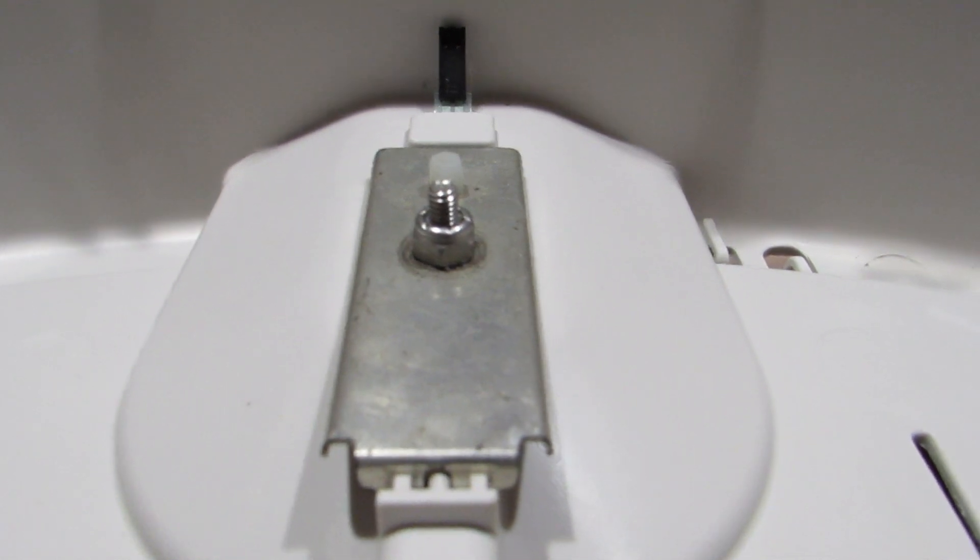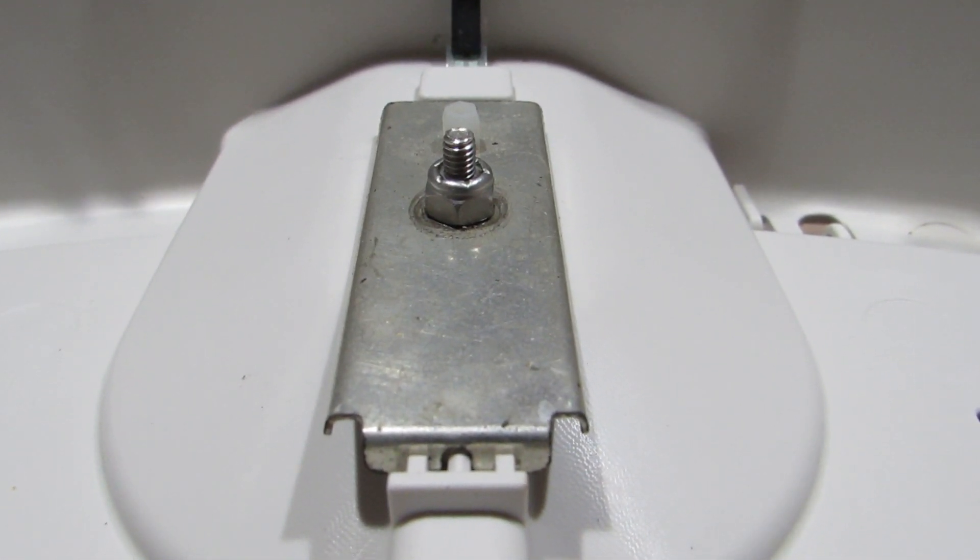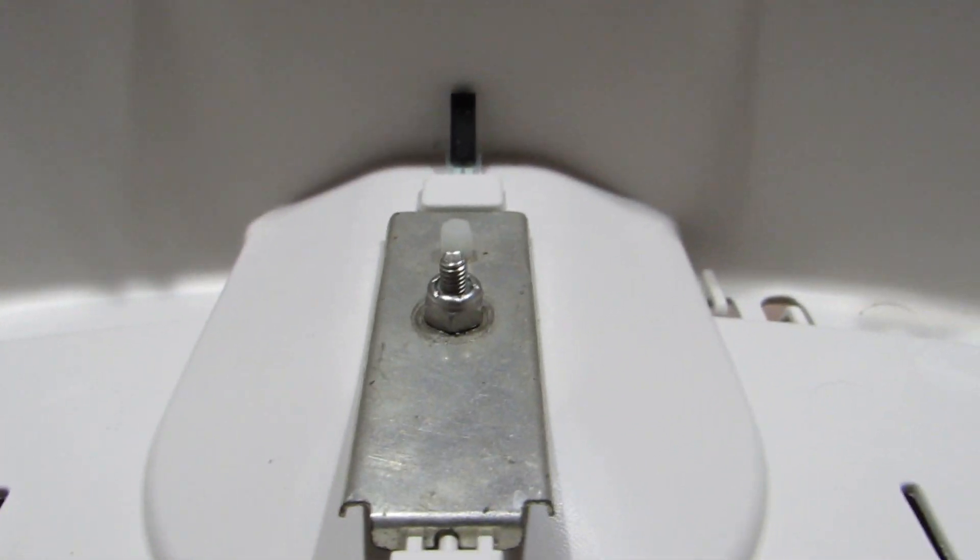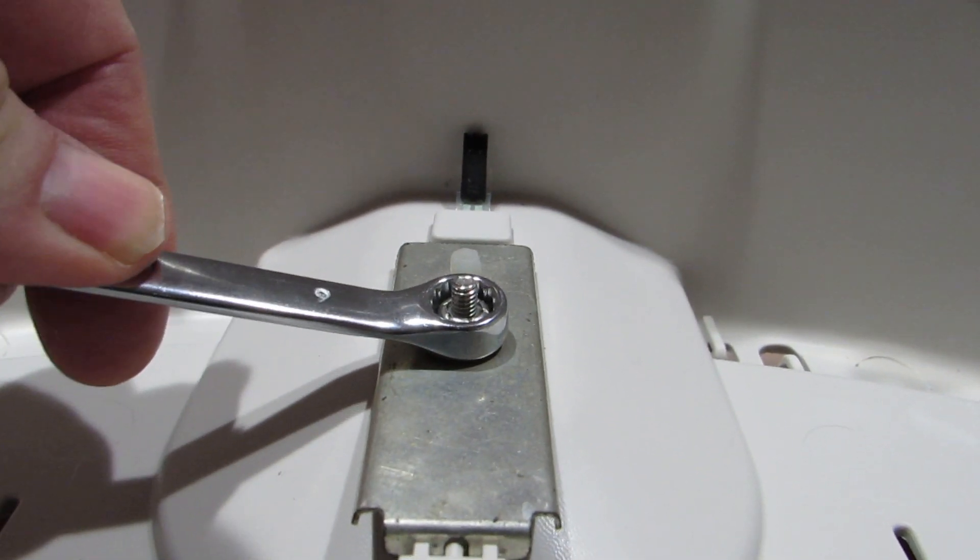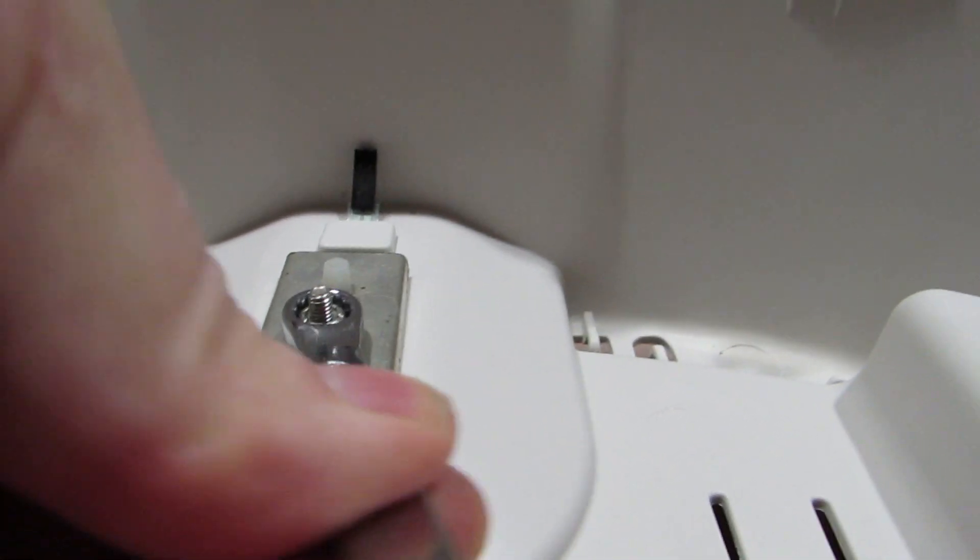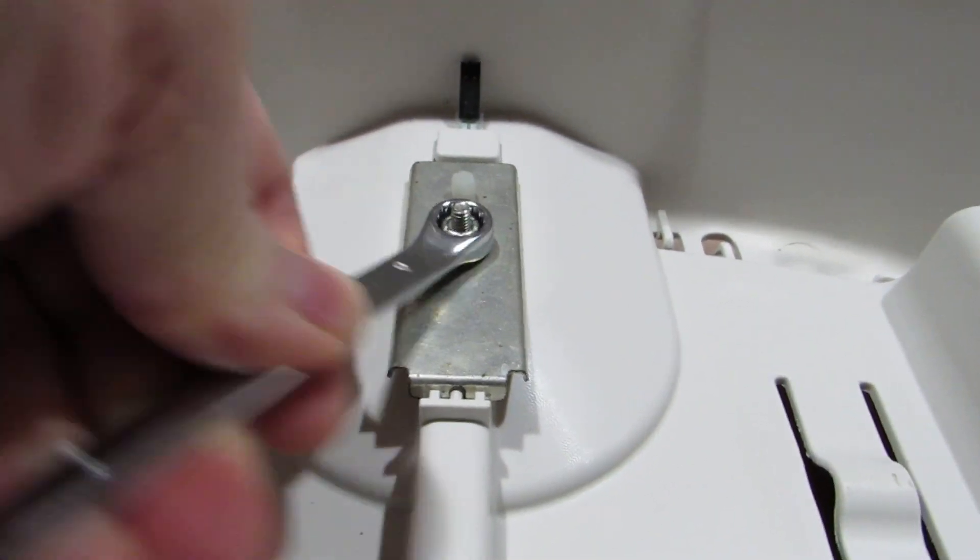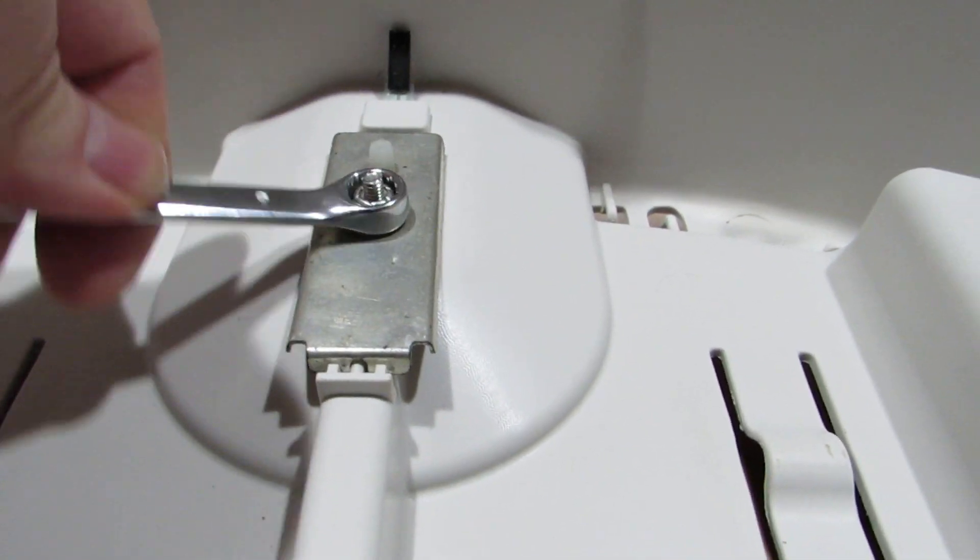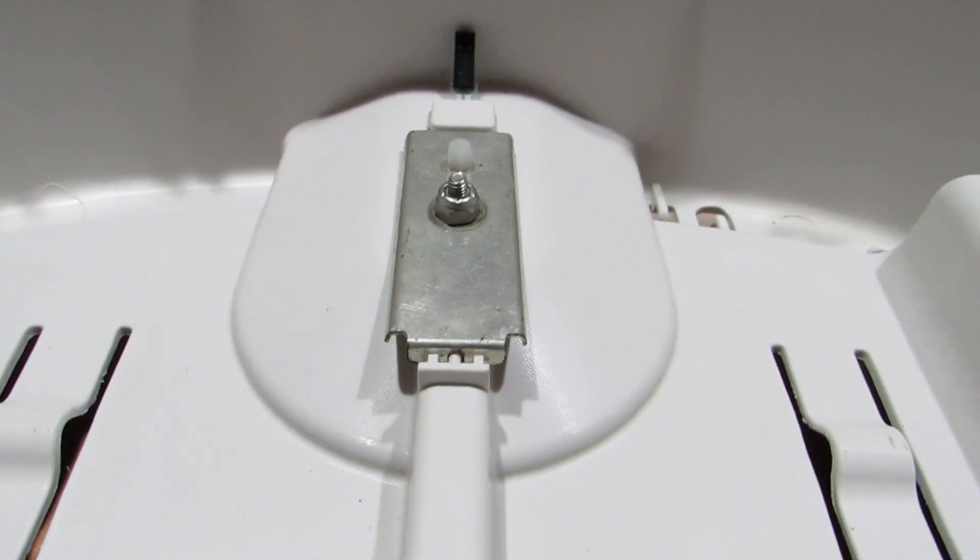Now that the nut has been threaded on the weight foot bolt until it has stopped, you can back it off the amount of turns that you need. In my case, it will be two full turns. I will go in quarter turn increments. So you turn counter clockwise, one full turn, two full turns.